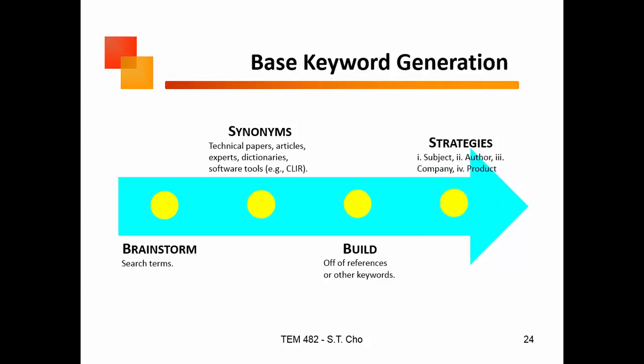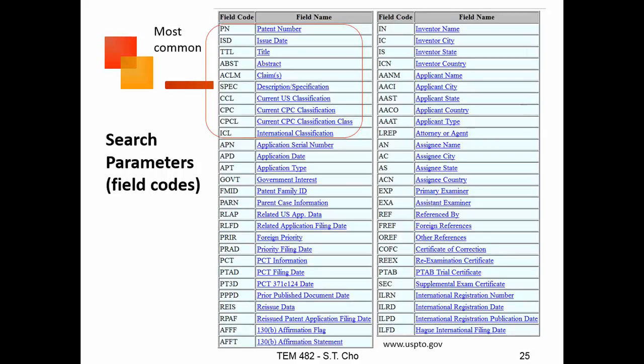You can look at strategies — whether you're searching by subject, by author, by company, or by product. These are the two main areas where people typically do their searches: either who actually did the patent or who the assignee is, or you're looking at a topic, which is the specification. These are the most common things people do when doing patent searches.